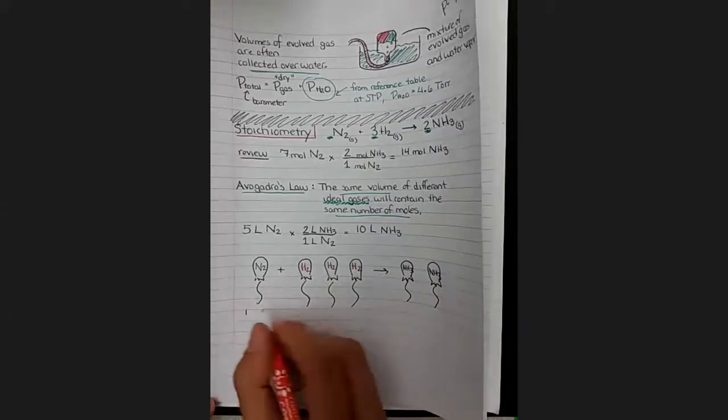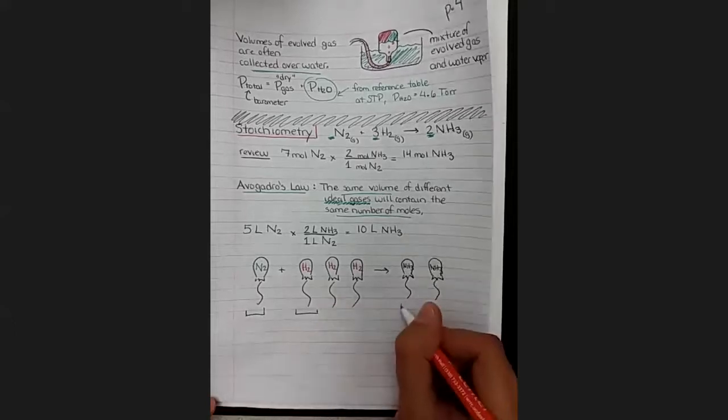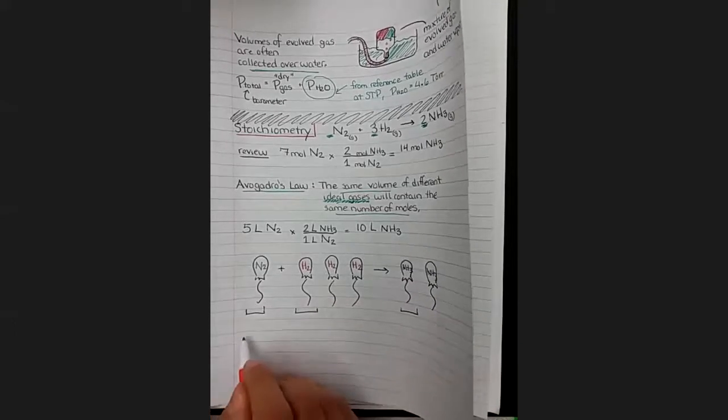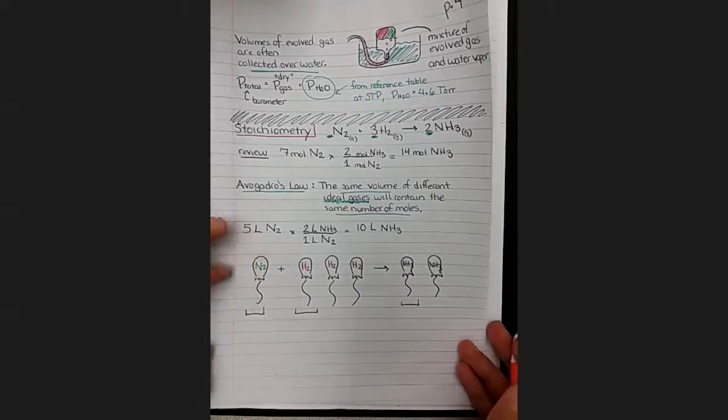The volume of this piece, of this balloon, of this balloon, and this balloon, the volume of each of these are the same. They have the same number of moles. That is a powerful magic trick that we are able to do here.